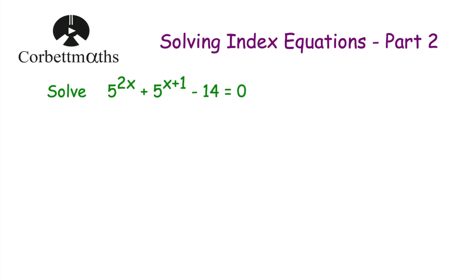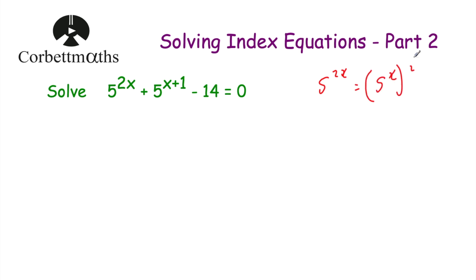Let's look at our next question: solve 5 to the power of 2x plus 5 to the power of x plus 1 subtract 14 equals 0. This equation looks a bit like the last two — we've got 5 to the power of 2x, which we can write as 5 to the power of x, all squared. The middle term is a little different: rather than being something times 5 to the power of x, we've got 5 to the power of x plus 1.